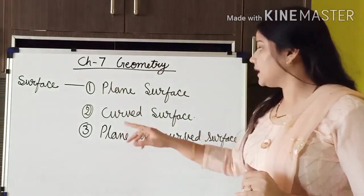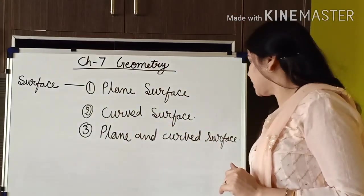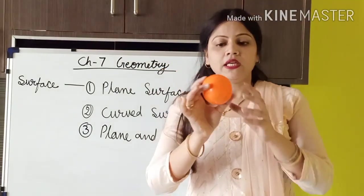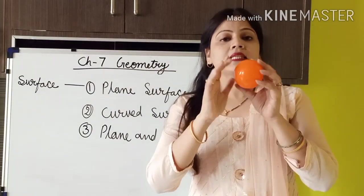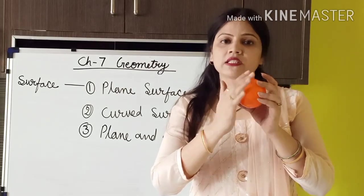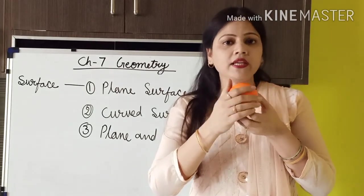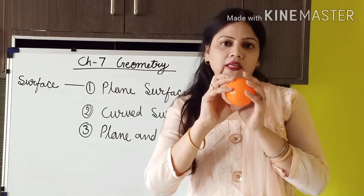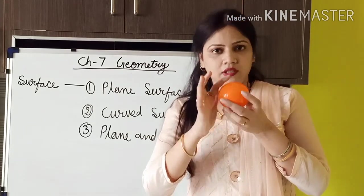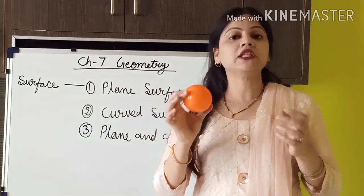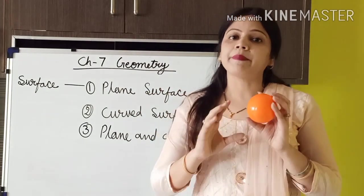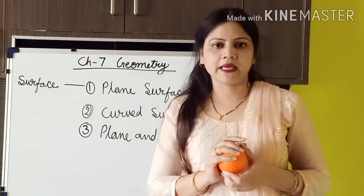The another kind of surface is curved surface. As you can see here, I have a ball. This ball is curved in surface. If you will touch it, it is not plane in any manner — wherever you will touch, it is curved. So the ball, the orange, the globe — these are the examples of curved shapes.